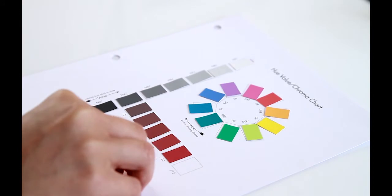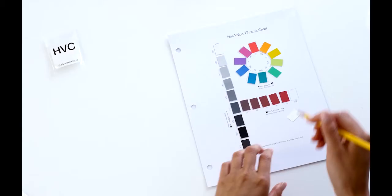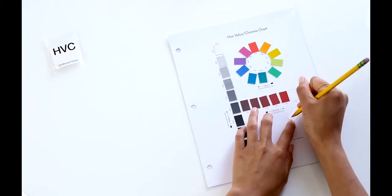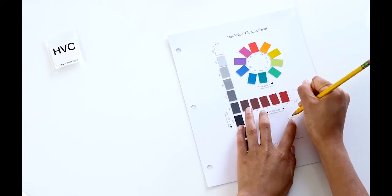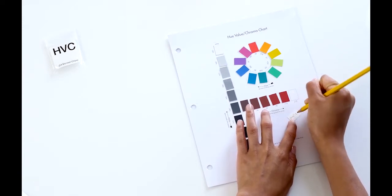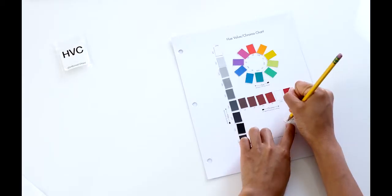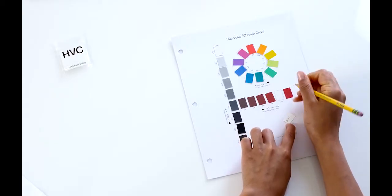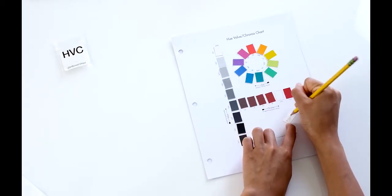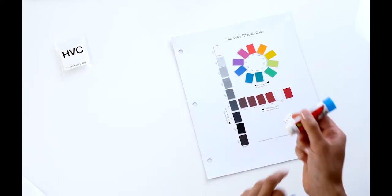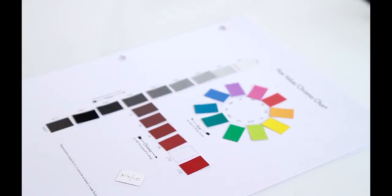Before you affix the chips to the charts, turn each chip over and write its hue letter, value, and chroma number on the back in pencil. You can find these numbers on the rows and columns on each chart. It is very important to label each chip on all the Munsell charts, because you will need them later for the exercises and the interactive charts.